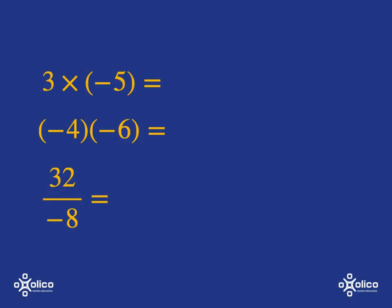So let's look at some examples. Why don't you pause the video and see if you can try these. Okay, so 3 multiplied by negative 5. That's going to be a positive multiplied by a negative. That answer has to be negative 15.